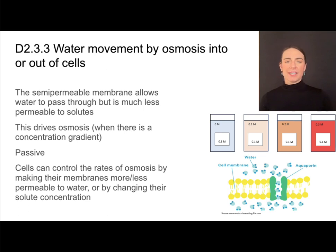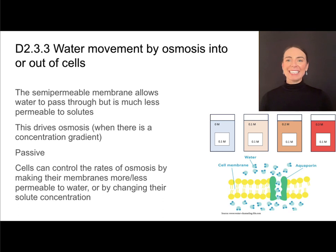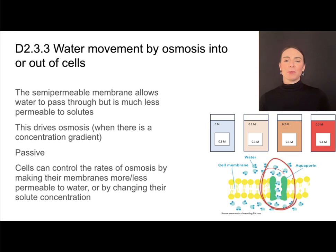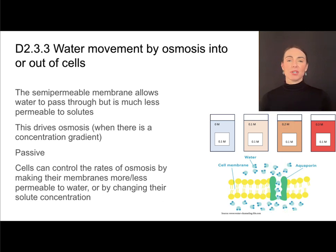If you've already studied things like the kidney or ADH, you probably know about this. Cells can control their rates of osmosis by controlling solute concentrations or controlling permeability.